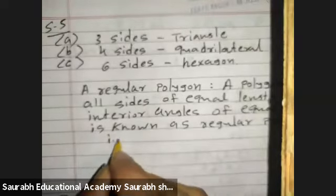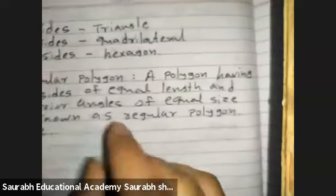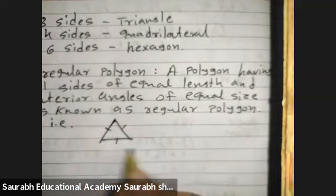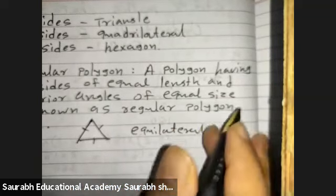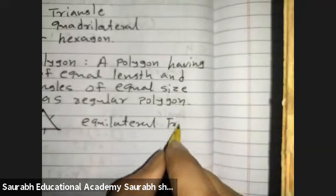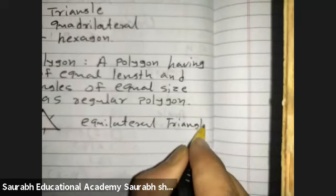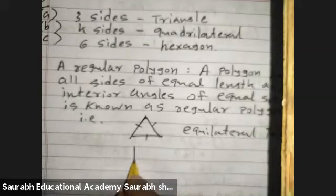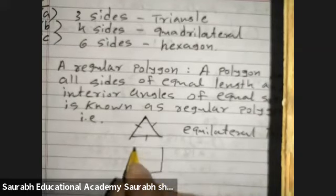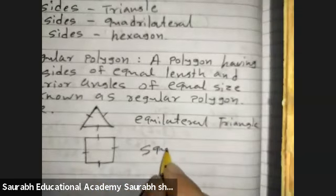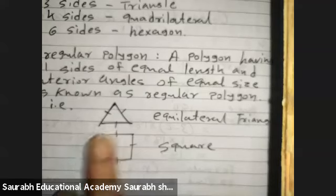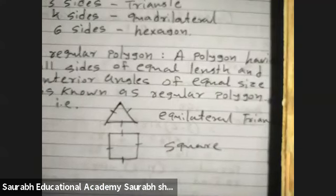Let me give you an example. If all sides are equal in a triangle, then it is an equilateral triangle — it's a regular polygon. If all sides of a quadrilateral are equal, it is called a square. All sides equal — it will be a square.